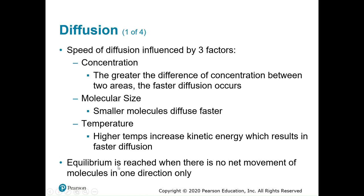Equilibrium is reached when there is no net movement of molecules in one direction. Even at equilibrium, molecules are always moving — just like in a classroom where people go back and forth between the room and the hallway, but neither side has more people overall. The concentration stays equal, but movement still occurs.